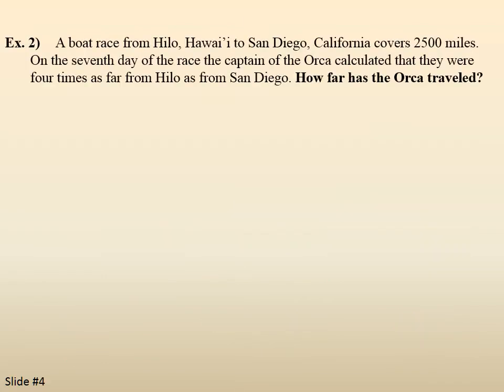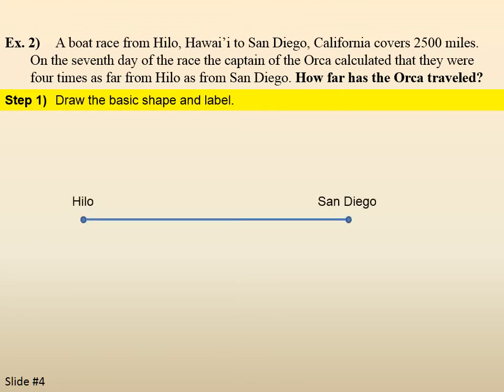Example 2. A boat race from Hilo, Hawaii to San Diego, California covers 2,500 miles. On the seventh day of the race, the captain of the Orca calculated that they were four times as far from Hilo as from San Diego. How far has the Orca traveled? Draw the basic shape and label. Well, we have Hilo and San Diego.